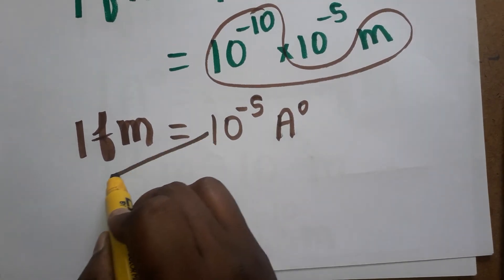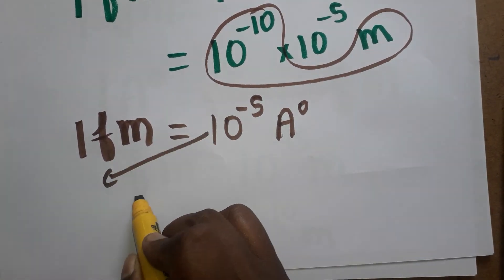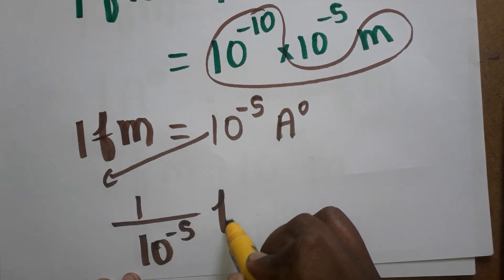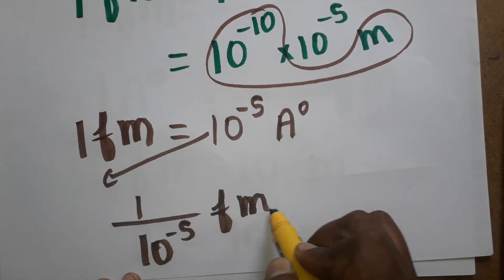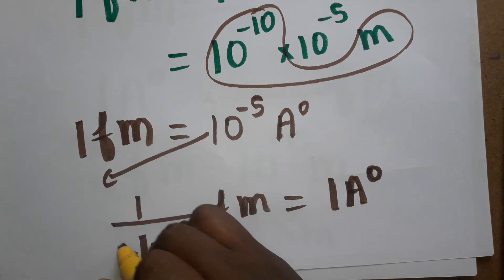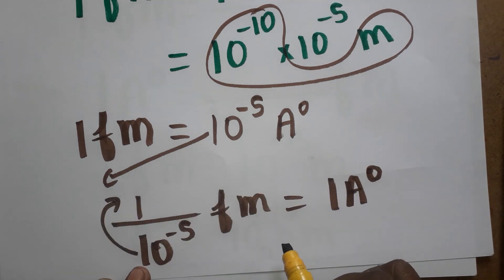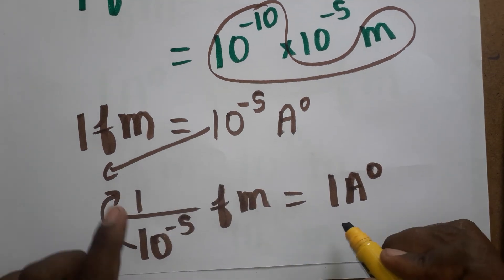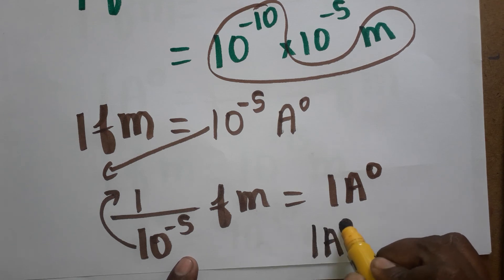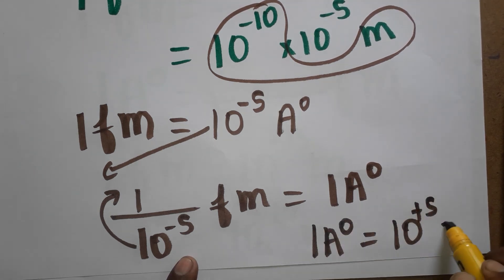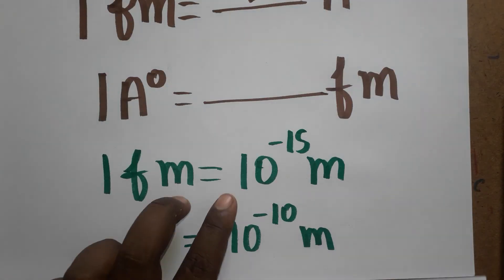To reverse, we bring 10 power minus 5 to the denominator: 1 divided by 10 power minus 5 femtometer is equal to 1 angstrom unit. Moving 10 power minus 5 from denominator to numerator changes the sign, giving us one angstrom unit is equal to 10 power plus 5 femtometer.